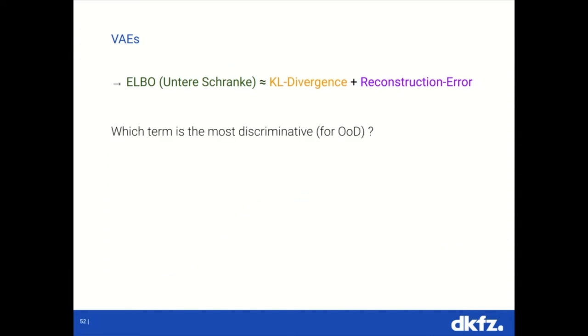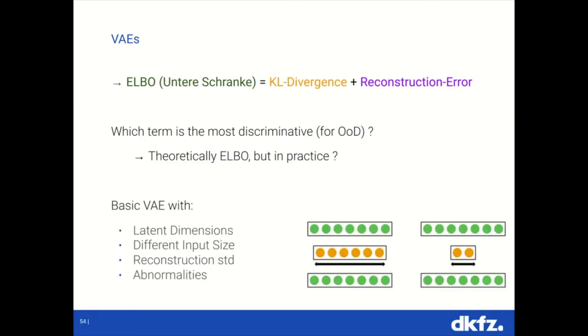However, is the ELBO really better than the KL divergence or the reconstruction error? Well, in theory, yes, since we only maximize the approximate ELBO. That means we can either lower the KL divergence or lower the reconstruction error or both. But it's not sure whether one is really low and one can still be high or the other way around. So, in theory, the ELBO should be better. But in practice, who knows?